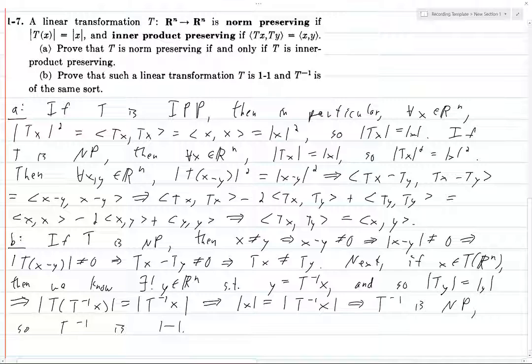We know that for all T which are NP, then T is one to one. And so in particular, since T inverse is NP, T inverse is one to one. And this completes the proof.